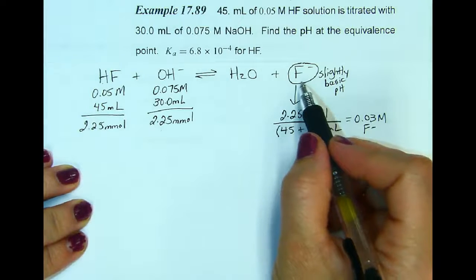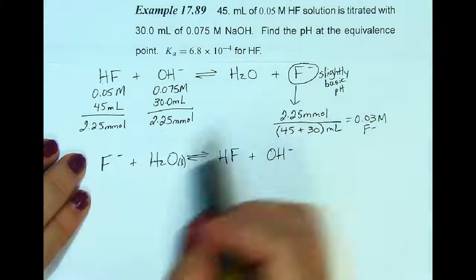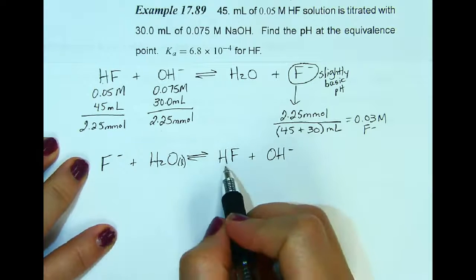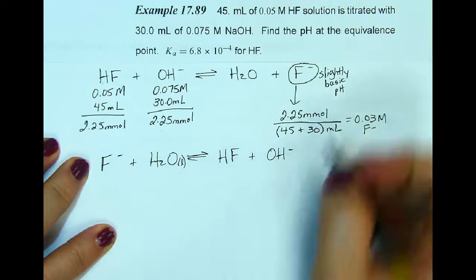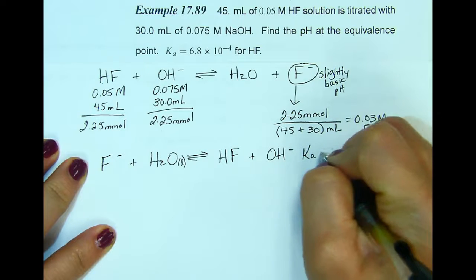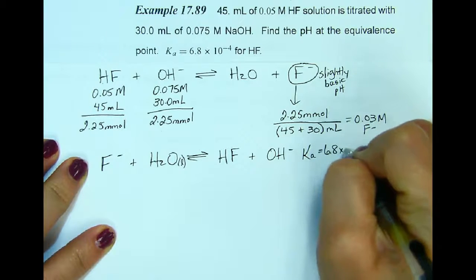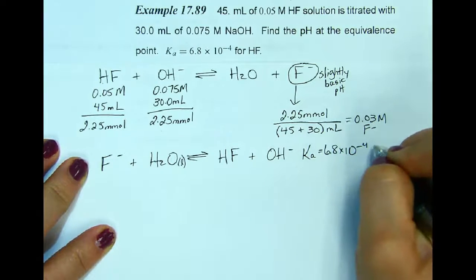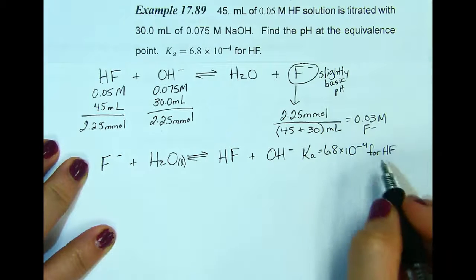Now I'm going to write an equation for the conjugate base. You place the fluoride in water as a liquid and we're going to get hydrofluoric acid plus hydroxide. Remember we were given a Ka of 6.8 times 10 to the negative 4 and that's for hydrofluoric acid.